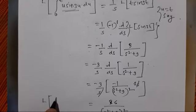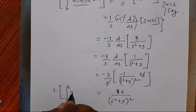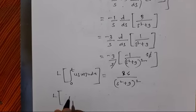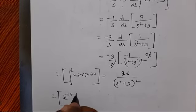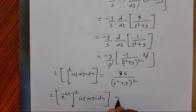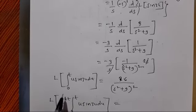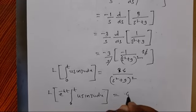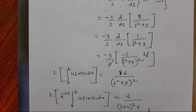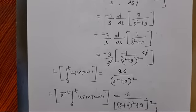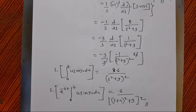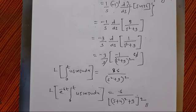But our question has this integral multiplied by e^(-4t). So applying the shifting property, s is replaced by s+4, giving 6/[(s+4)²+9]². Therefore the required answer is L{e^(-4t) · ∫₀ᵗ u · sin(3u) du} = 6 / [(s+4)²+9]². In this video we have discussed the Laplace transform of integration. For more videos you can subscribe to my channel. Thank you.